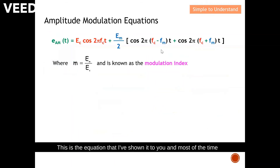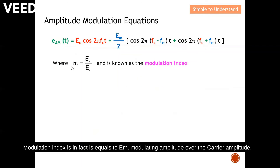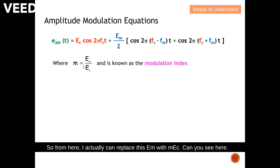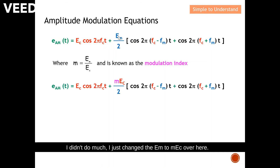Most of the time we express this using the modulation index. The modulation index m is equal to em divided by ec, the modulating amplitude over the carrier amplitude. From this, I can replace em with m·ec in the equation. I simply change em to m·ec, and with this substitution we are ready to draw the frequency domain representation.